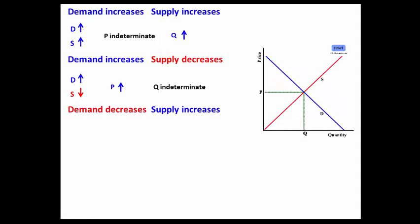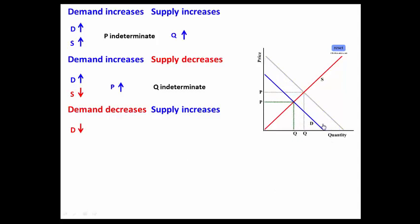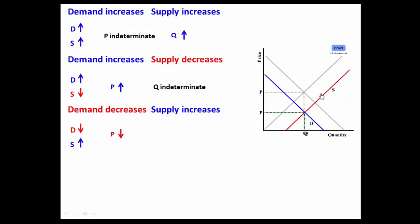Demand decrease, supply increase. As demand decreases, notice that price and quantity go down. As supply increases, watch what happens to price — price continues to go down. But do you notice that the quantity is indeterminate? It could either go down, stay the same, or the quantity could go up. So quantity is indeterminate.